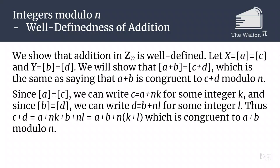Since the class of a is equal to the class of c, we can write c as a plus nk and d can be written as b plus nl. So c plus d can be written as a plus nk plus b plus nl, which is a plus b plus n times quantity k plus l, which is congruent to a plus b modulo n. Because we get the same thing modulo n every time, addition is going to be well defined on Z mod n.